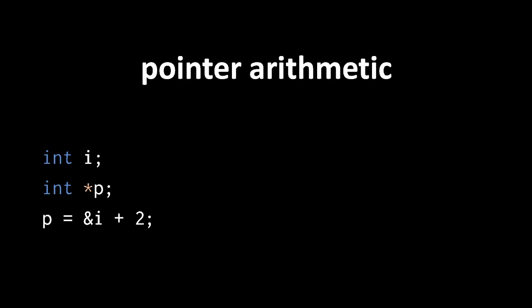When we add an integer to a pointer, we get a pointer value of the same type representing an address that is that number of places above in memory. To explain what I mean by place, it's easiest to consider an example. Here, the reference of i returns an int pointer, and adding 2 to that pointer value returns an int pointer value that represents the address that is 2 ints above in memory.